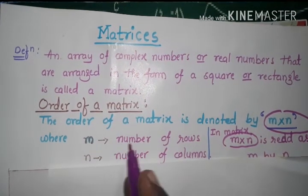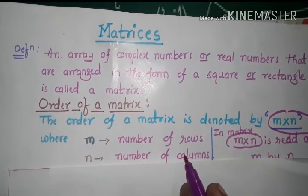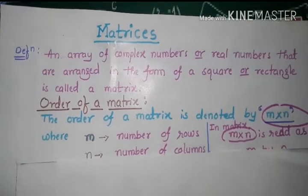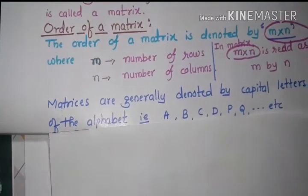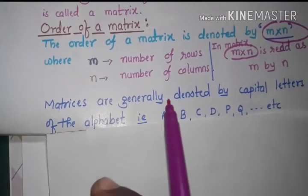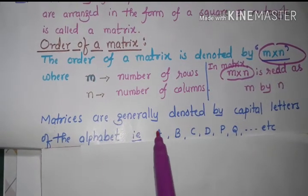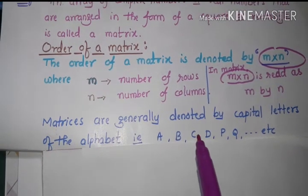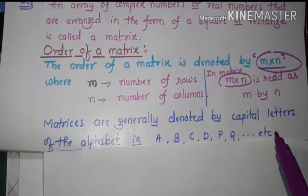Where m represents the number of rows and n is the number of columns. Next, matrices are generally denoted by capital letters of the alphabet: capital A, capital B, capital C, capital D, capital P, capital Q, etc.